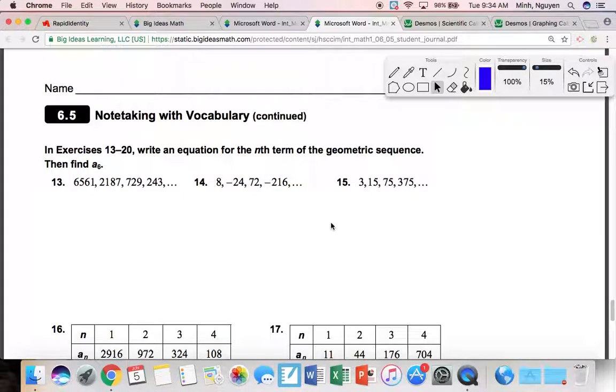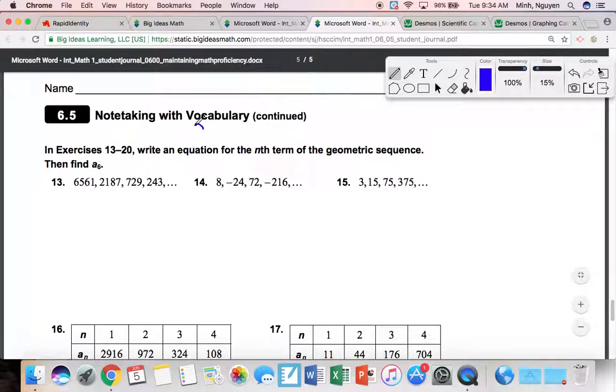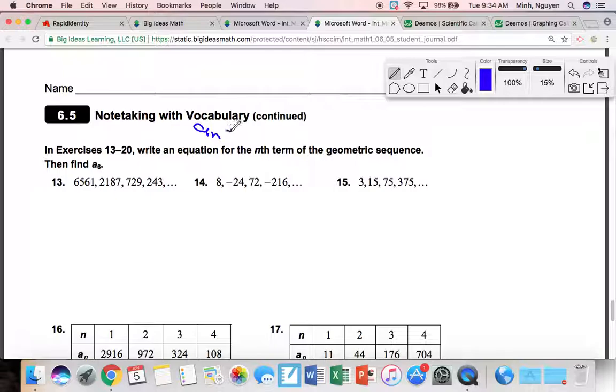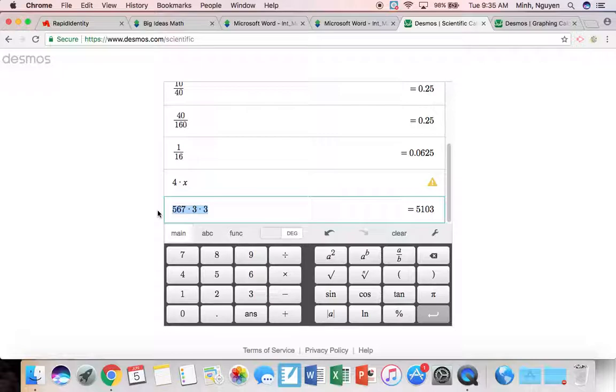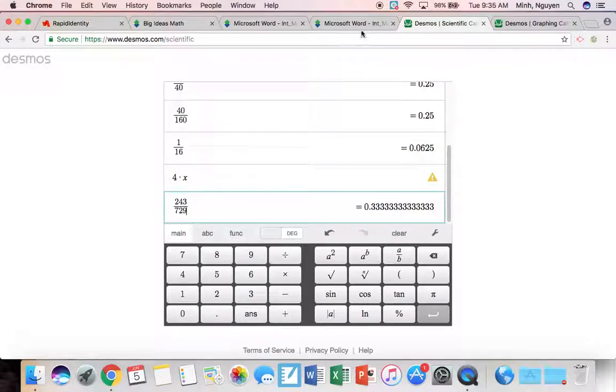Write an equation for the nth term. Now we're going to go back to here. Really, like I said, we just have to find the initial, the constant ratio, and then n minus 1. So the first number, 6561. What is my constant ratio? It seems like I'm dividing by 3, or multiplying by 1 third. Let's see, 243 divided by 729, that is indeed 1 third.